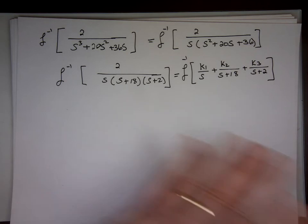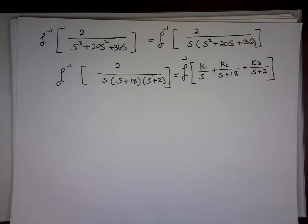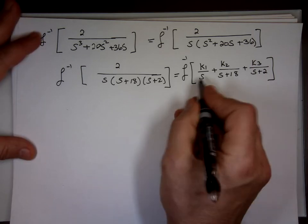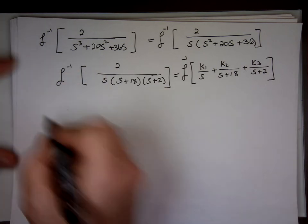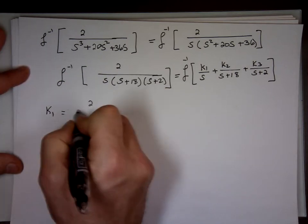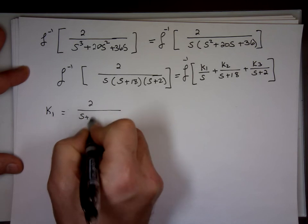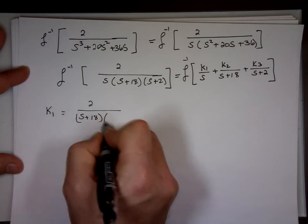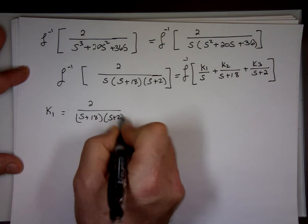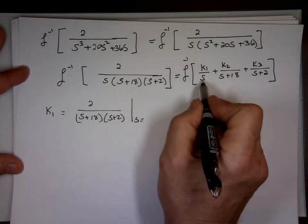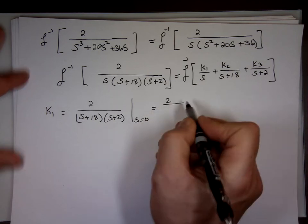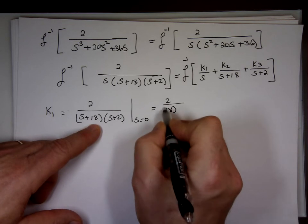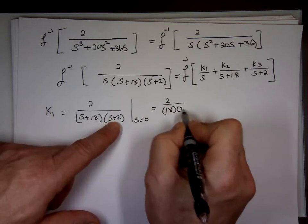Let me find K1, K2, K3 then I'm done. I know the inverse Laplace of each one of them. So to find K1, notice K1 is sitting on top of S, go to this one, take the S out, when S equals what makes this one 0? 0. 0+18 is 18, 0+2 is 2, that's 1/18.